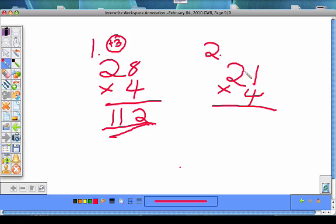First you multiply the numbers in the ones place. 1 times 4 equals 4. Then you multiply the number at the bottom times the number in the tens place. 4 times 2 equals 8.